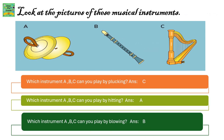Now look at the pictures of these musical instruments. Answer the following questions. The first question is: which instrument among A, B and C can you play by plucking? The answer is C.